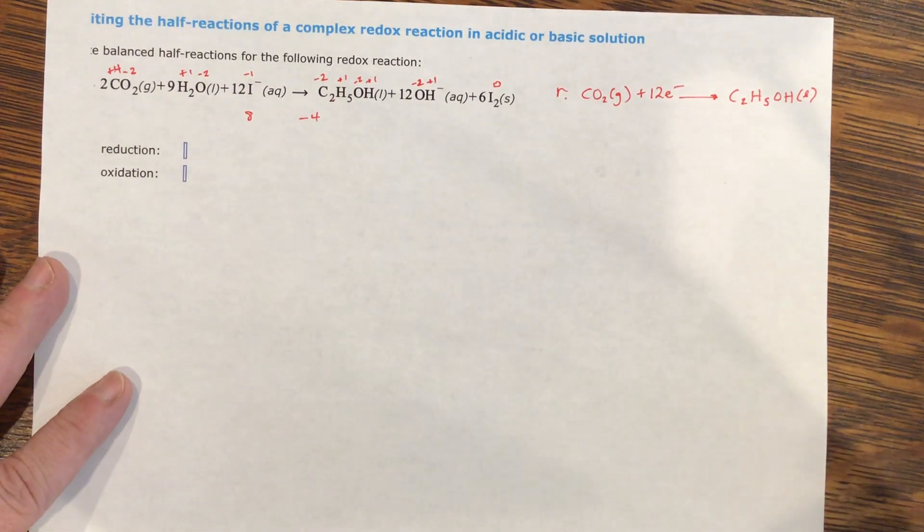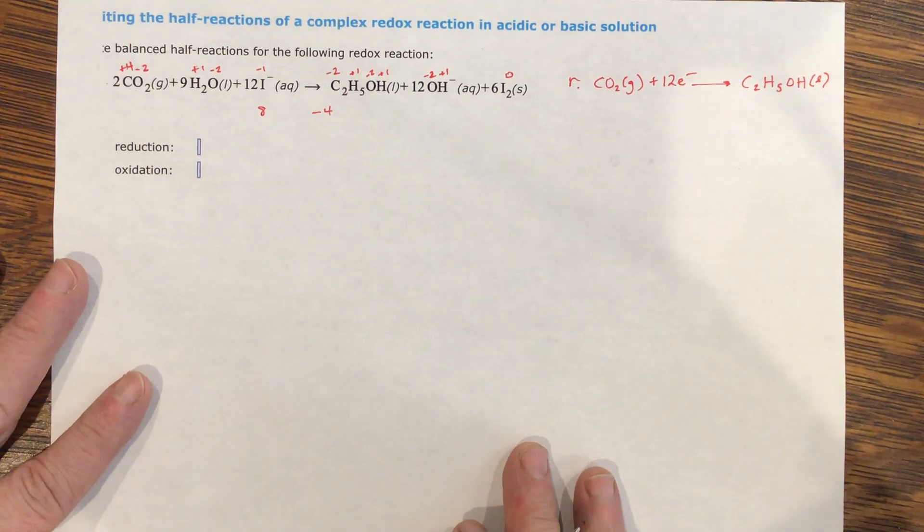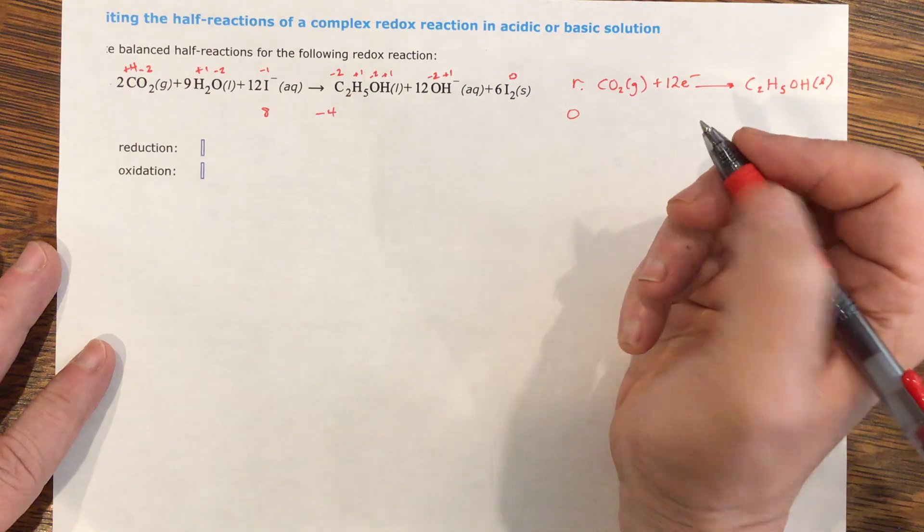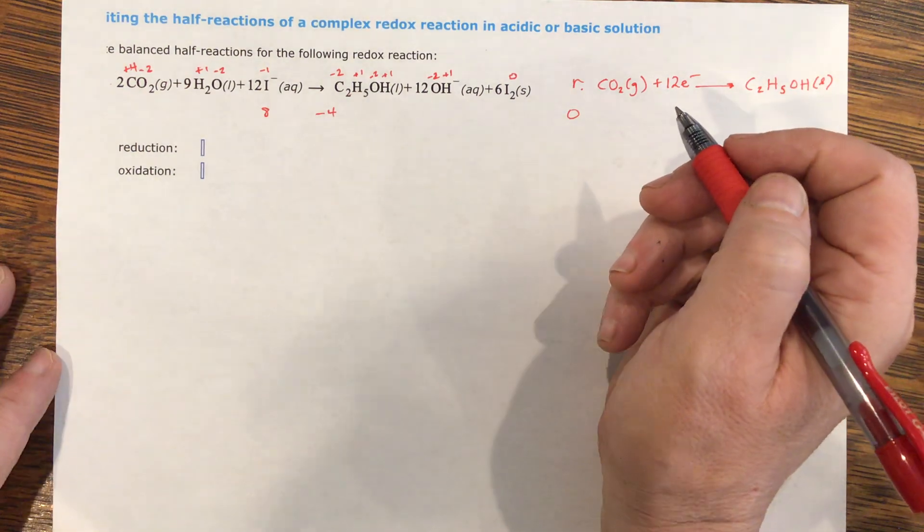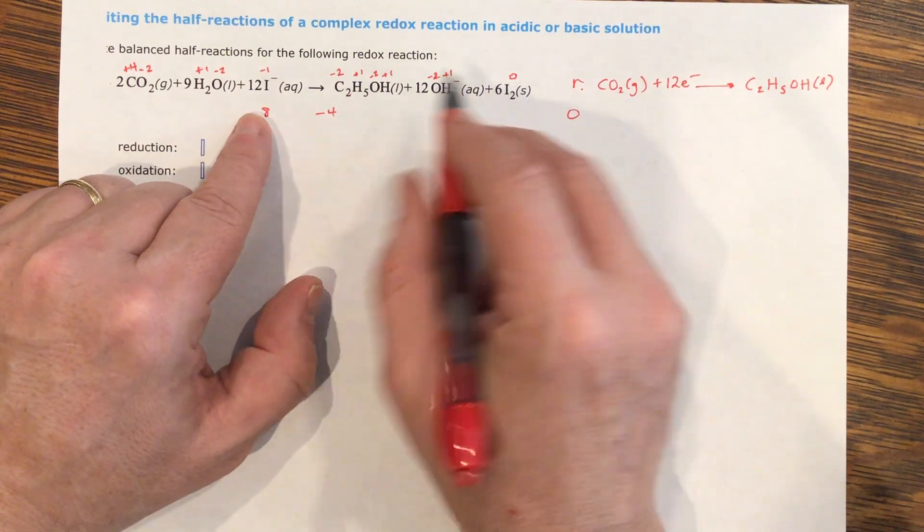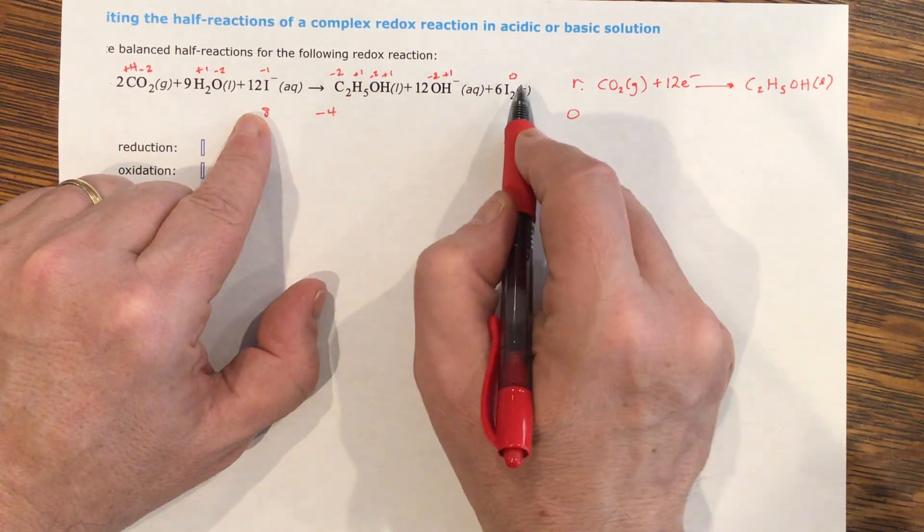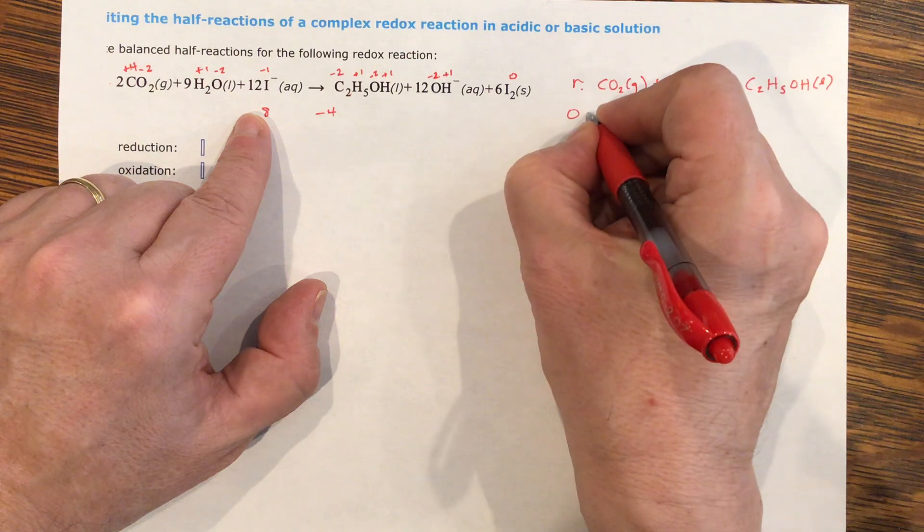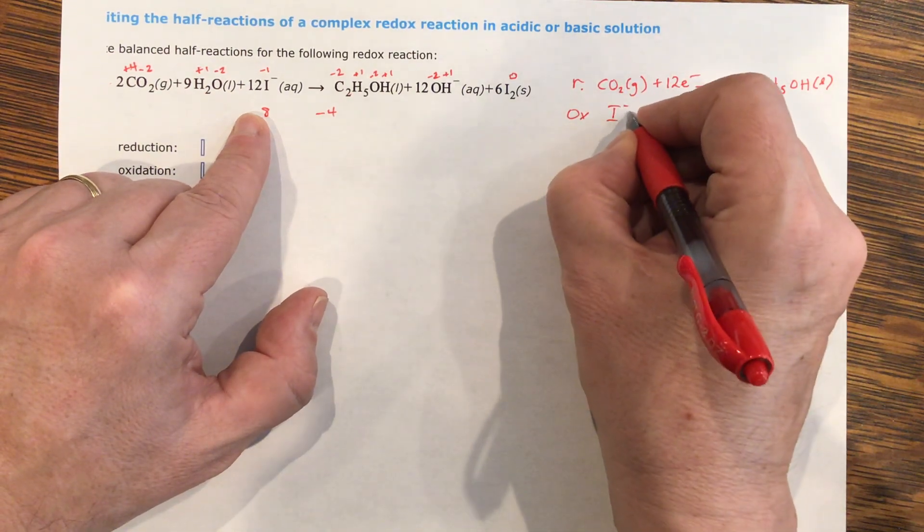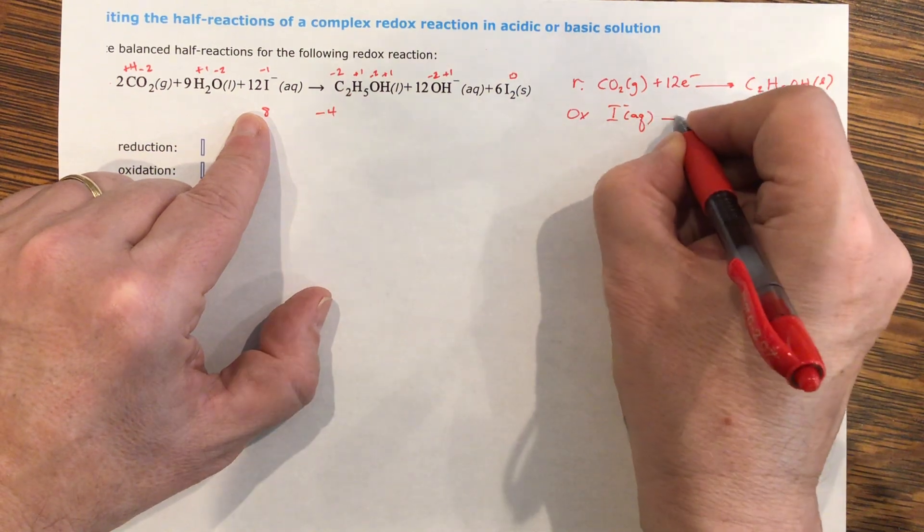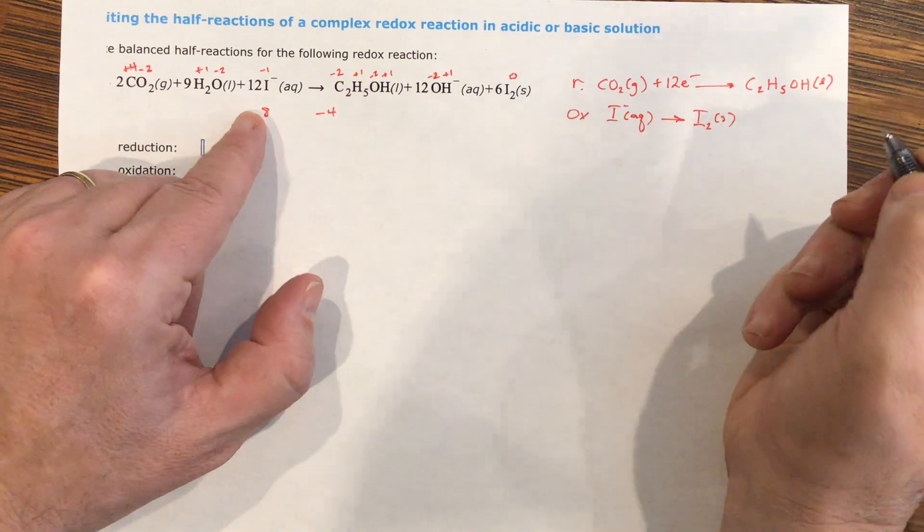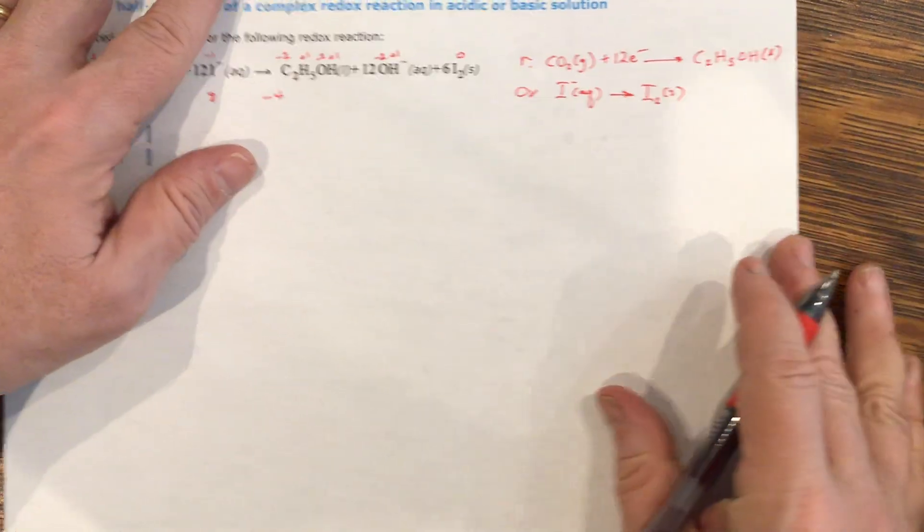The next one is the oxidation. So my oxidation is the ones that went up in charge, and I see this as iodine is negative one going to zero. So this is going up from negative two to zero. So my oxidation is going to be the I2, or I negative, which is aqueous, going to I2, which is solid.